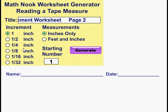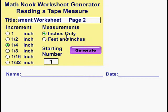The second field is the increments field, and this specifies what the increments are on the measurements of your worksheet. I'm going to go ahead and choose one-quarter inch. The measurements can be in feet and inches, or inches only — inches only means that all the measurements will be less than one foot.